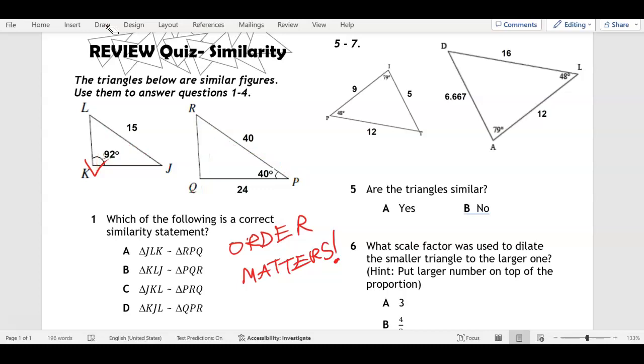If we do JLK, that has to be PRQ and it's not, so A is not in the right order. KLJ has to be QRP and it's not. JKL, J to K to L should be P to Q to R in the same order but it's not. So it's not C.